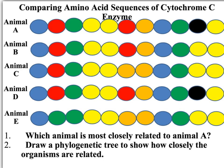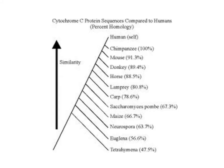We can use this information to draw a phylogenetic tree by looking at the differences in amino acid sequences. This diagram shows a phylogenetic tree constructed by comparing cytochrome C sequences to humans. We can see that human and chimpanzee cytochrome C is 100% identical in terms of amino acid sequences. Mouse is 90%, donkey 89%, horse 88%, and so on. From these comparisons, we've managed to draw up an evolutionary map showing the timescale at which these different species diverged through evolution.